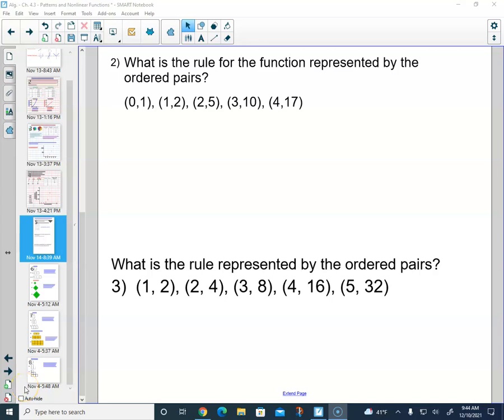Okay, what is the rule for the function represented by the ordered pairs (0,1), (1,2), (2,5), (3,10), and (4,17)?